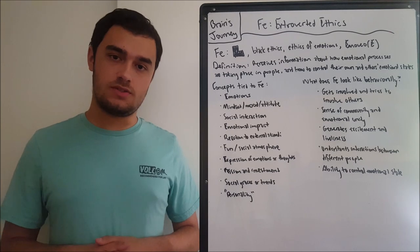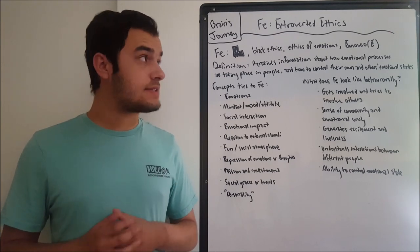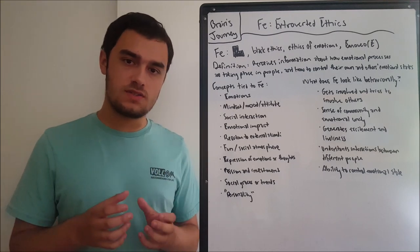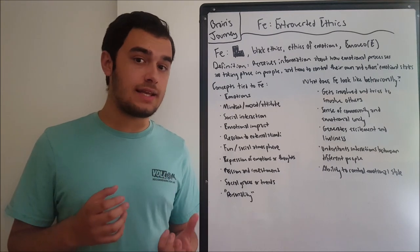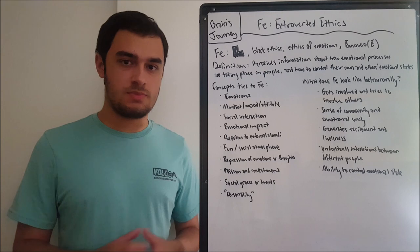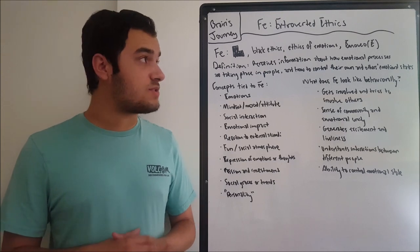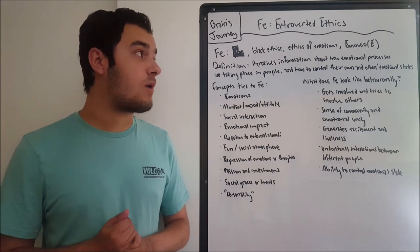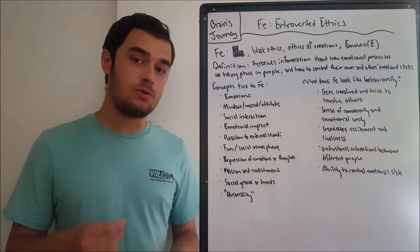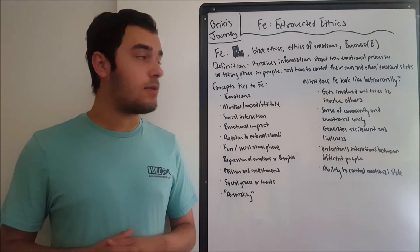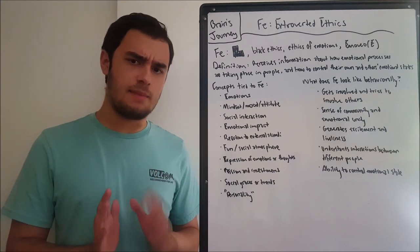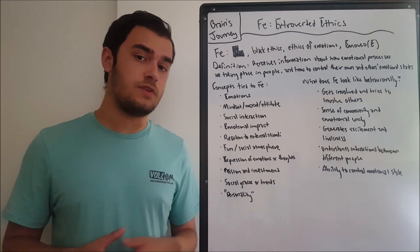You'll notice in the socionics system that we call the F functions, instead of feeling — as in the MBTI system — we call it ethics, because in socionics that more accurately wraps up what those functions are about. We're going to get to that at another point in time; I'll explain that in more depth in a future video.